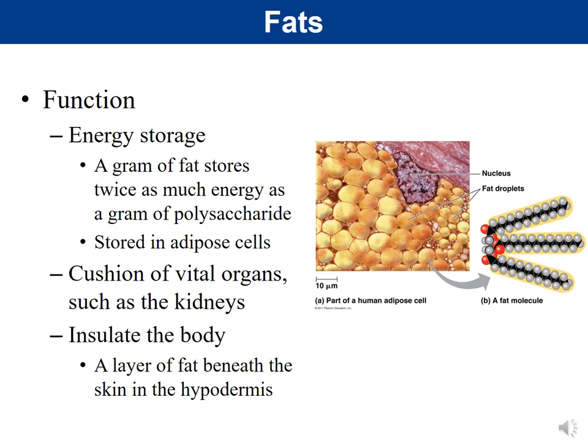Fats function as energy storage — a gram of fat stores twice as much energy as a gram of polysaccharide. Fats are stored in specialized adipose cells in adipose tissue. They also cushion vital organs such as the kidneys, and a fat layer in the hypodermis beneath the skin helps insulate and keep the body warm.